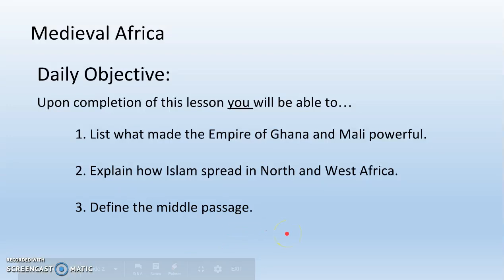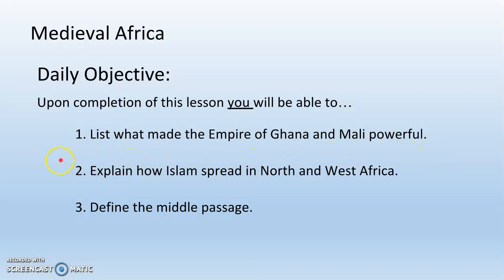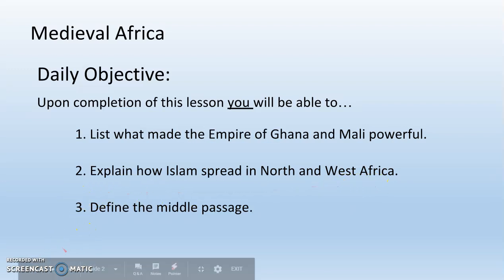Today we're going to learn about medieval Africa. We have three daily objectives. Number one, what made the empires of Ghana and Mali powerful. Number two, explain how Islam spread in North and West Africa. And number three, define the Middle Passage.